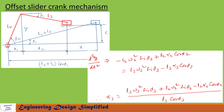To find alpha3, the angular acceleration of the coupler, we differentiate the previous equation once more with respect to time. We get: −l2·omega2²·sin(theta2) + l2·alpha2·cos(theta2) = l3·omega3²·sin(theta3) − l3·alpha3·cos(theta3). After rearranging: alpha3 = (l3·omega3²·sin(theta3) + l2·omega2²·sin(theta2) − l2·alpha2·cos(theta2)) / (l3·cos(theta3)).